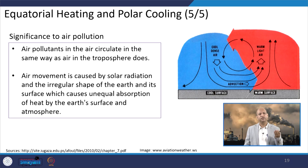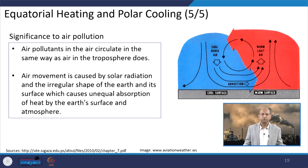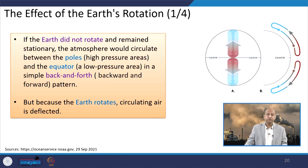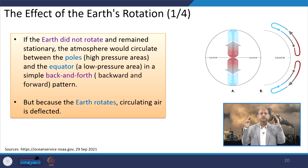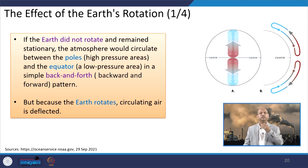Air movement is caused by solar radiation and the irregular shape of the earth's surface, which causes unequal absorption of heat, producing wind patterns and circulation motions — and accordingly dispersion and diffusion happen in the atmosphere. The effect of earth's rotation is important because without it, if the earth remained stationary, the atmosphere would circulate simply between poles — high pressure regions — and the equator — low pressure regions — in a simple back-and-forth pattern, but it is not so.